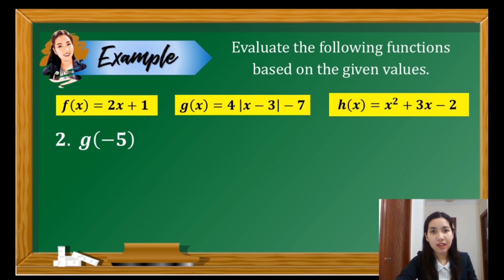Here, we're asked to evaluate the function g when x is negative 5. Following the same procedure, we have 4 times the absolute value of negative 5 minus 3, minus 7. We have to combine the terms inside the absolute value. So we have 4 times the absolute value of negative 8, minus 7.